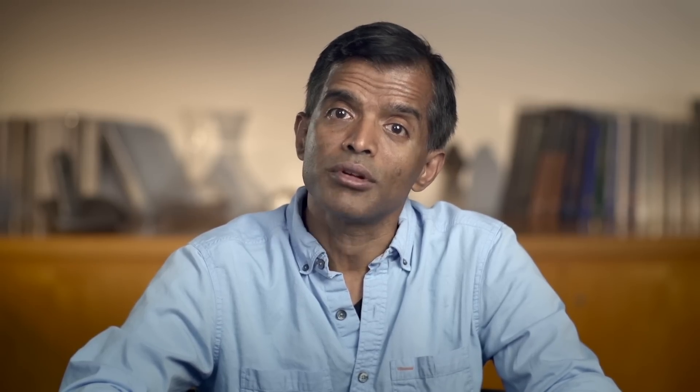The second and most widely used approach is to estimate a historical premium. You take a slice of history — 20 years, 50 years, 80 years — look on average what you'd have made investing in stocks over that period (say 8%), then look on average what you'd have made investing in T-bonds (say 3%). 8 minus 3 is 5 — that's a historical premium. There's a table that reports 12 different numbers, all of which pass muster as historical risk premiums.